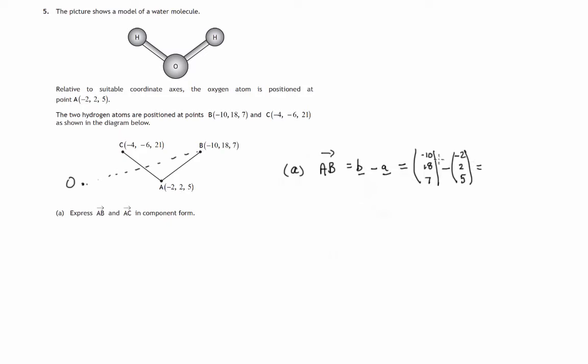So the journey from a to b has components, negative 10 minus negative 2, that's negative 10 plus 2, which is negative 8 for the x component. 18 minus 2 is 16 for the y component, 7 minus 5 is 2 for the z component.